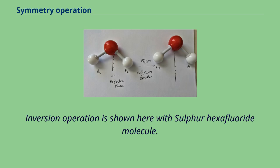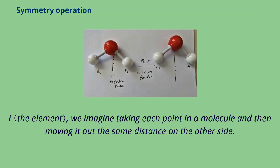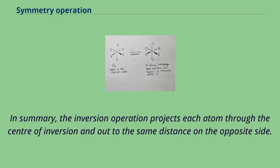Inversion operation is shown here with sulfur hexafluoride molecule. All of the fluorine atoms change their position to opposite side with respect to sulfur center in an inversion through a center of symmetry. I, we imagine taking each point in a molecule and then moving it out the same distance on the other side. In summary, the inversion operation projects each atom through the center of inversion and out to the same distance on the opposite side.